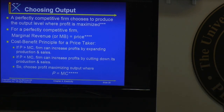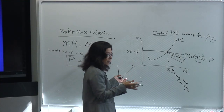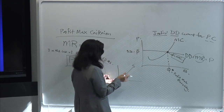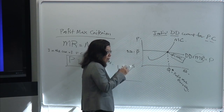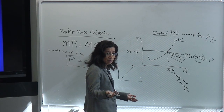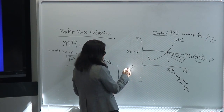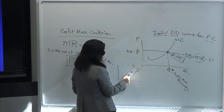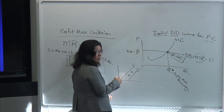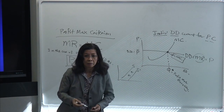That's the case from Chapter 3 — the determinants of the supply curve. If the cost of production, like labor, goes up, the supply curve shifts to the left, causing you to produce less.